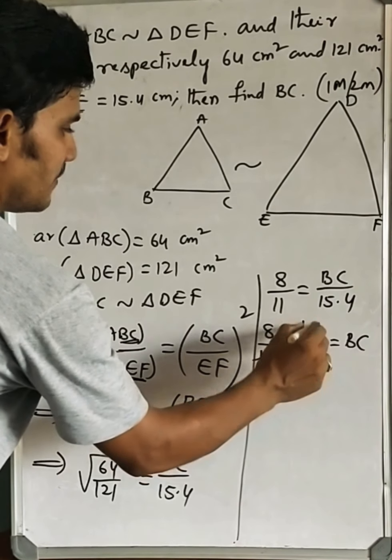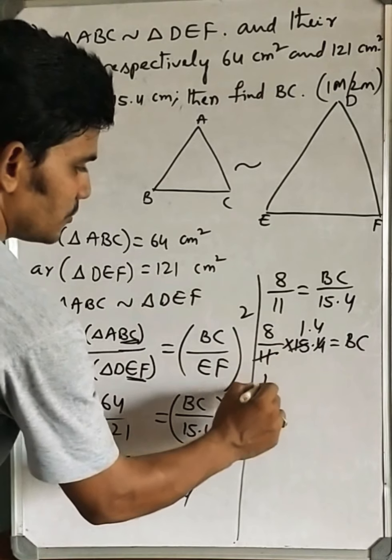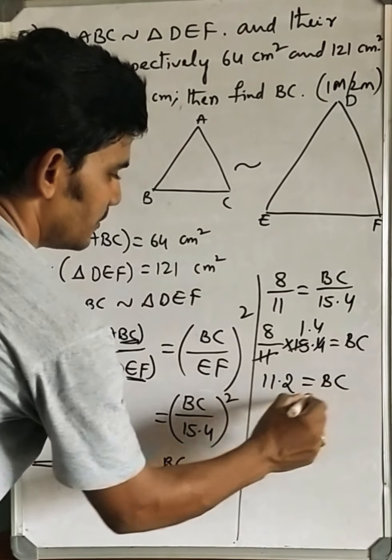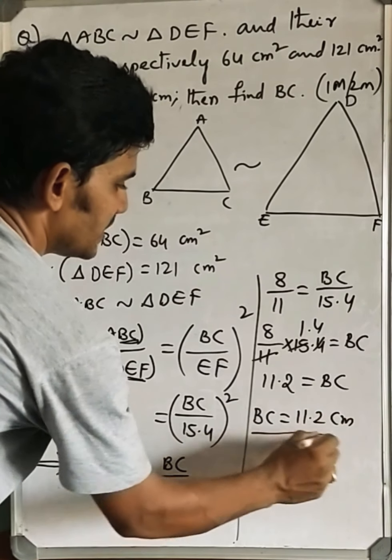11 times 1 is 11, 11 times 4 is 44, 14 times 8 is 112. After the decimal point, this is the BC value. That is, BC is equal to 11.2 centimeters.